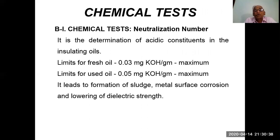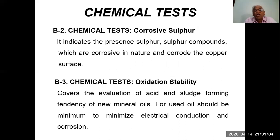For chemical tests, the neutralization number is a determination of acidity in insulating oil. The limit for fresh oil is 0.03 mg KOH per gram maximum, and for used oil is 0.05 mg KOH per gram maximum. High acidity leads to sludge formation, metal surface corrosion, and lowering of dielectric strength. Corrosive sulfur indicates the presence of sulfur compounds which are corrosive and corrode copper surfaces. Oxidation stability covers evaluation of acid and sludge-forming tendency; for used oil it should be minimum to reduce electrical conduction and corrosion.